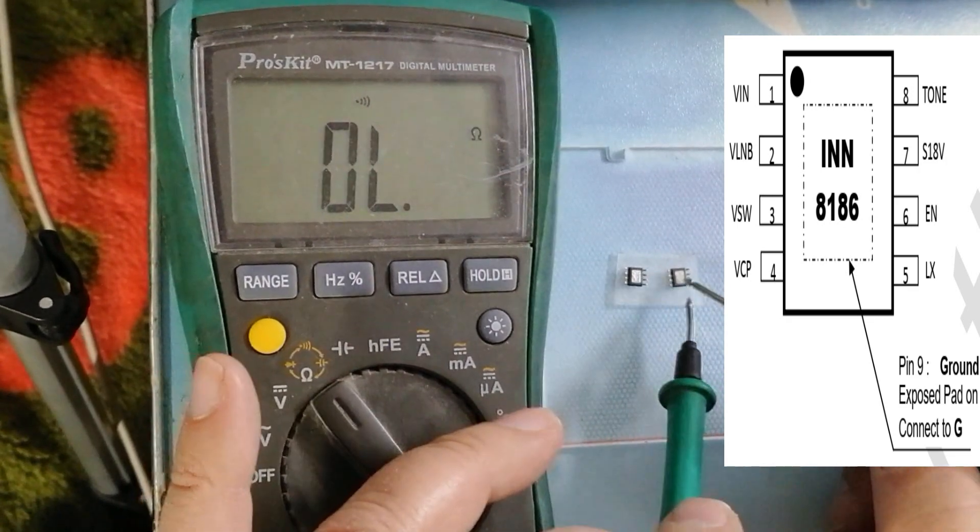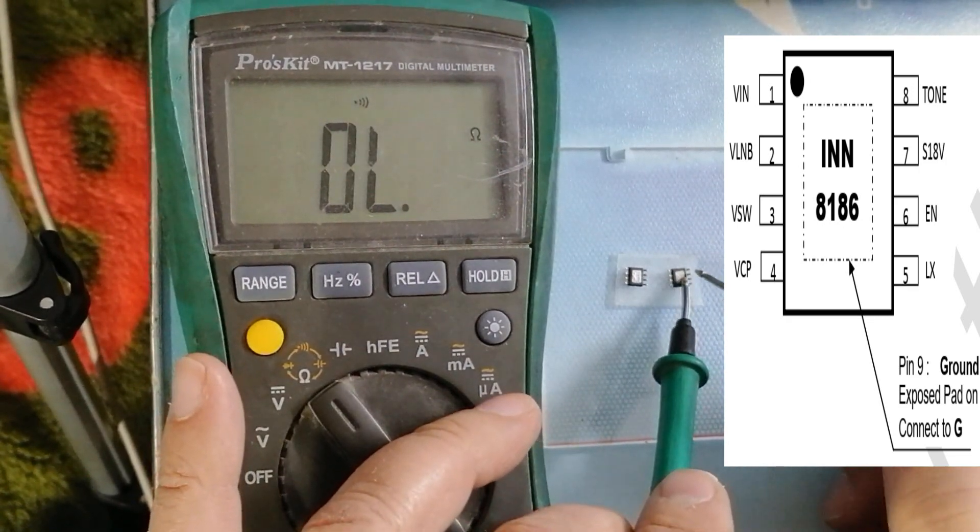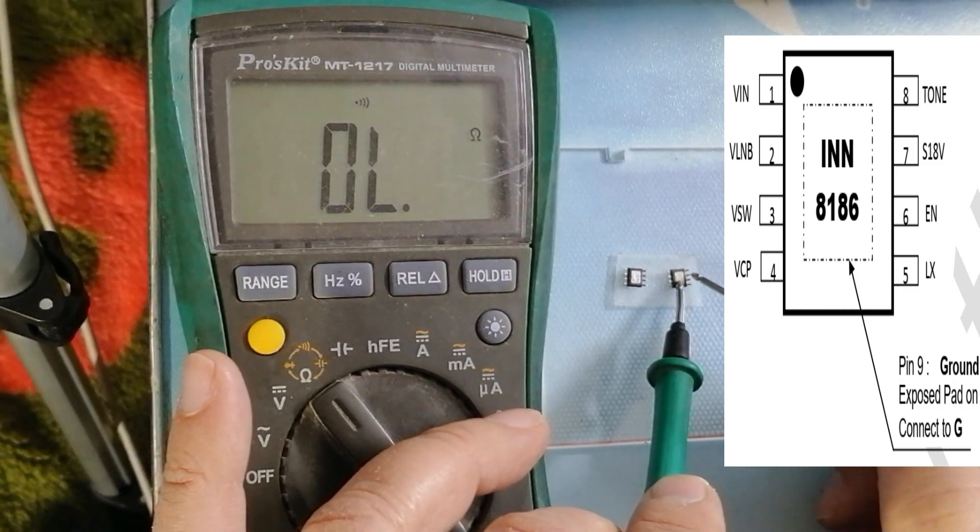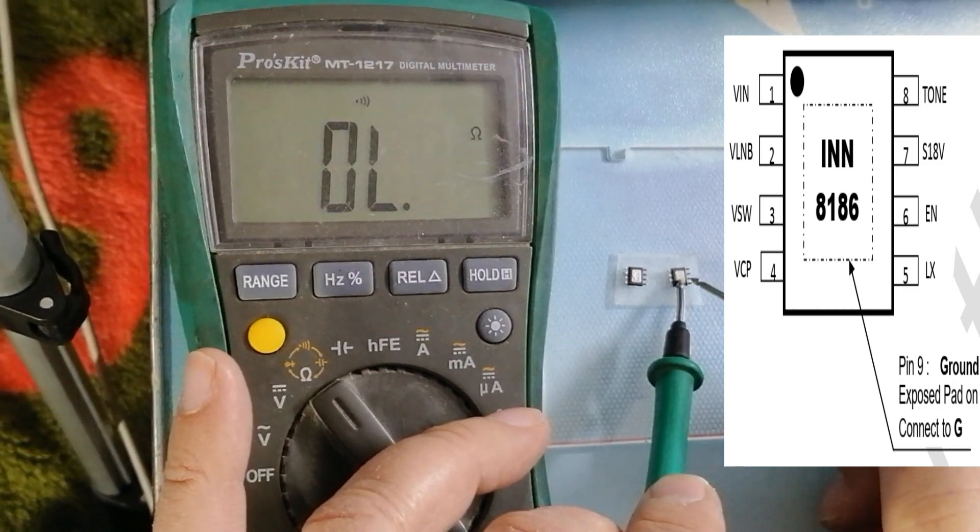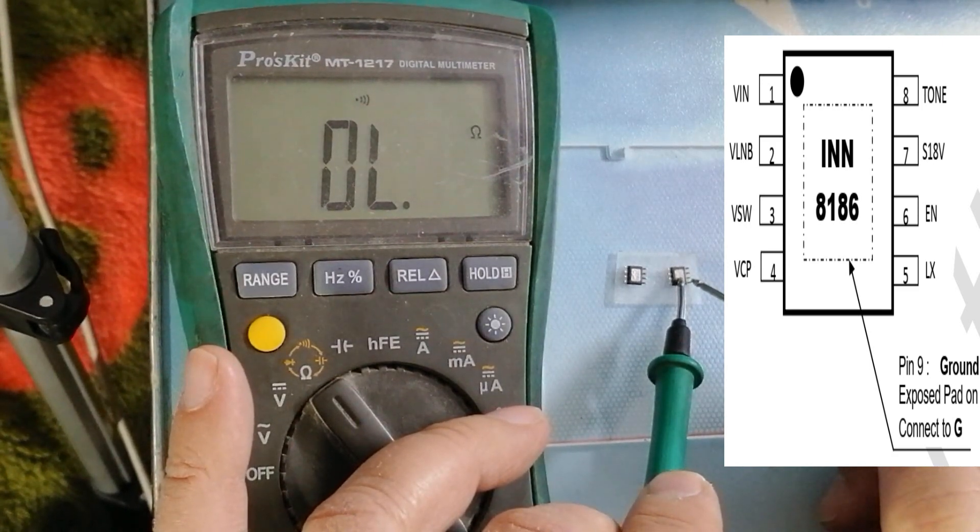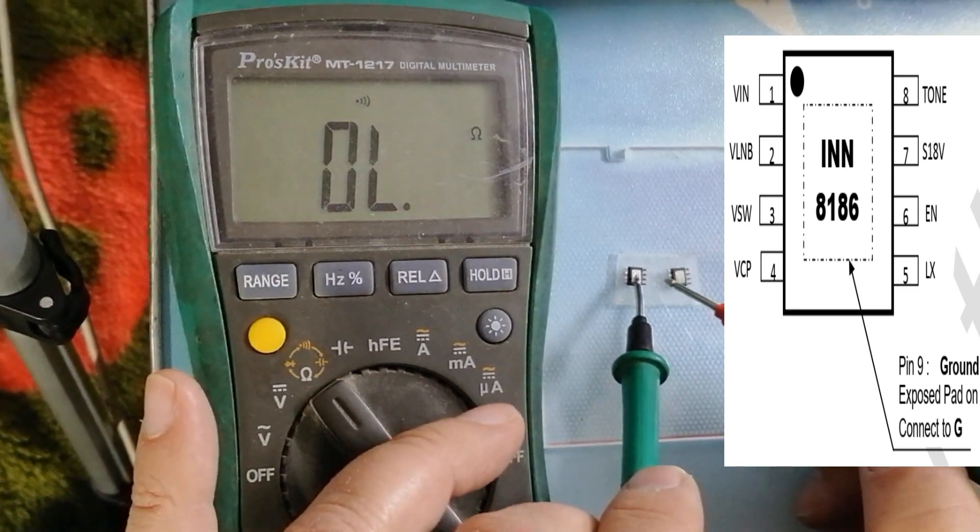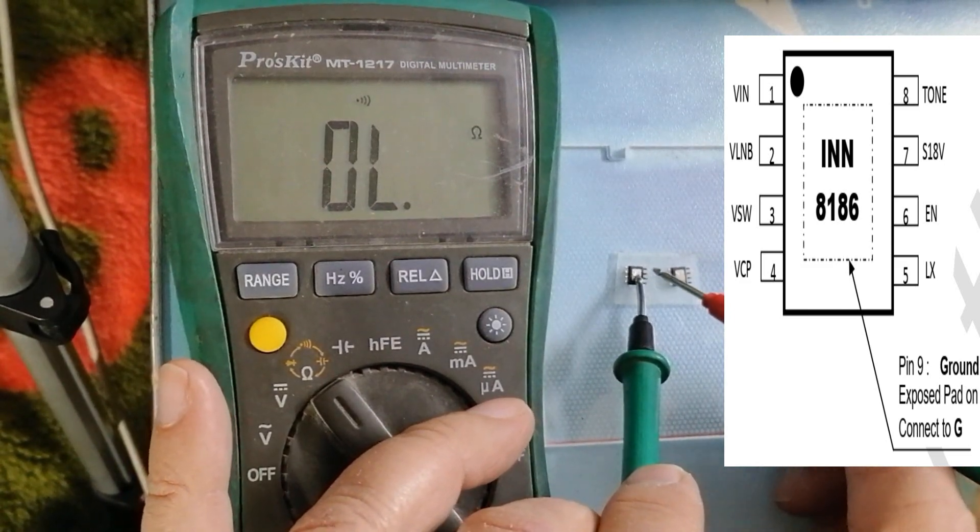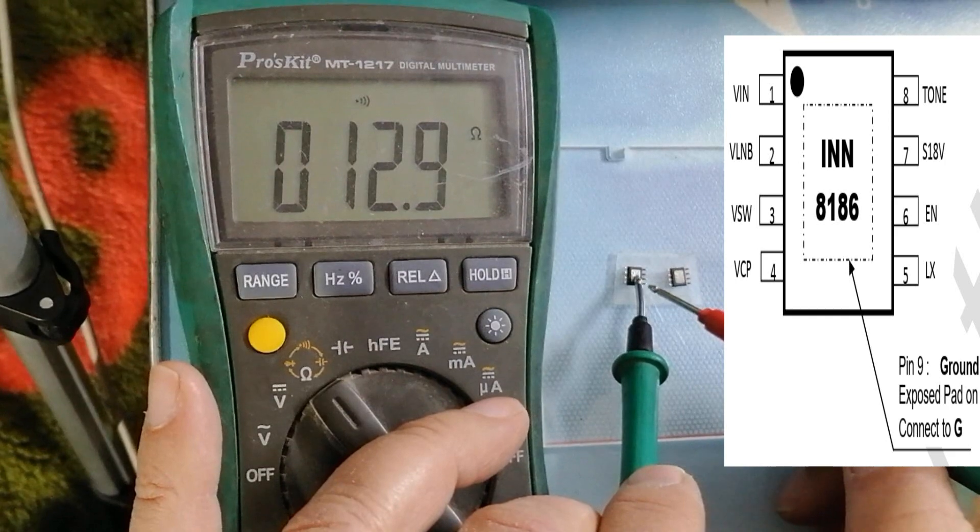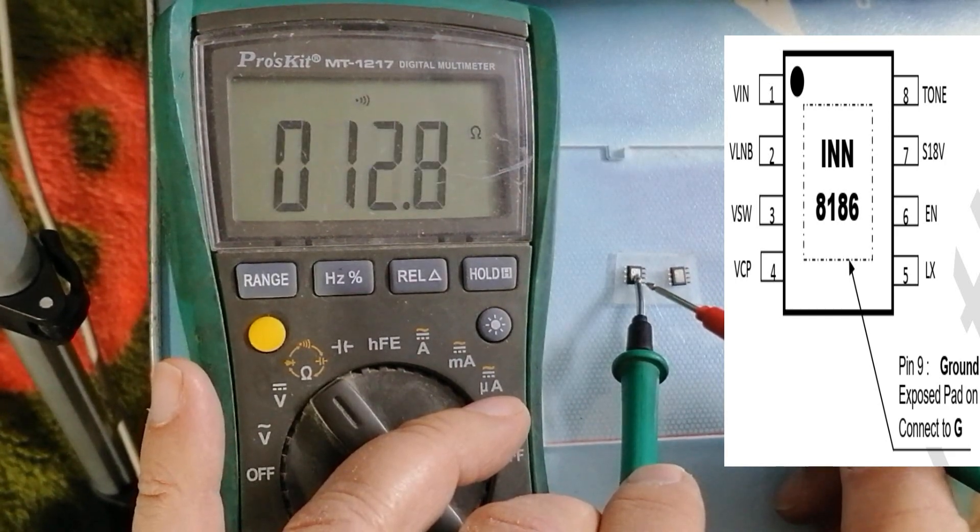Now we may compare with the new one. This is the new one I have. This is ground and pin number 1, there is no reading. Pin number 3, no reading. Pin number 4, no reading. Now if I compare with this one, pin number 3 gives short and pin number 4 gives short.